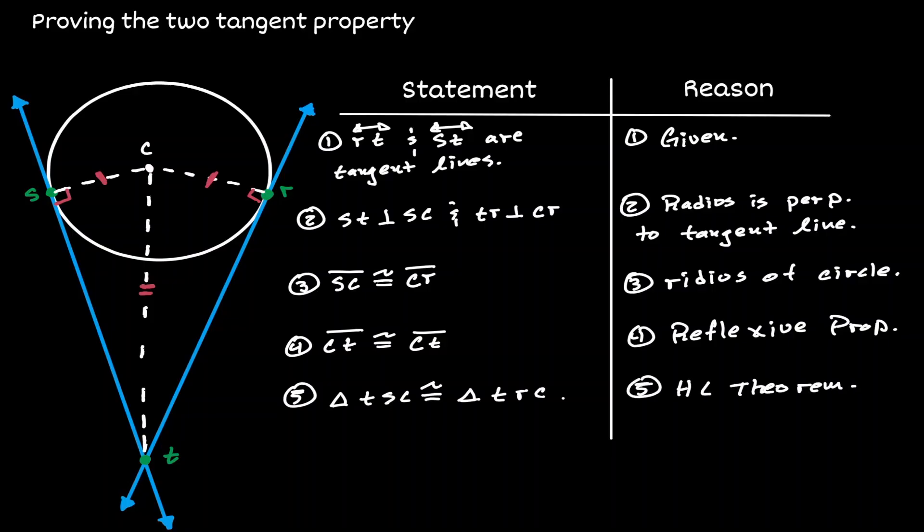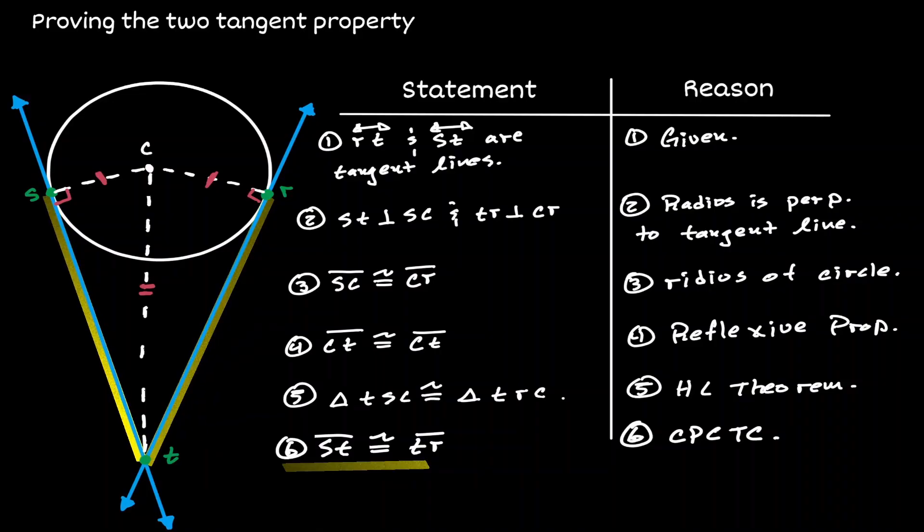And because both of those triangles are congruent to each other, then corresponding parts are congruent to each other. Therefore, ST is congruent to TR. And we are done, because this is what we wanted to show. We wanted to show that the lengths from the point of tangency to the point of intersections are of the same length, congruent to each other.